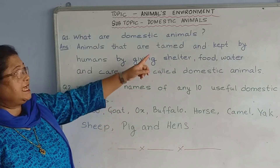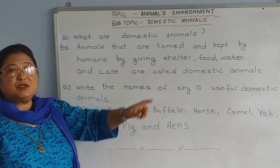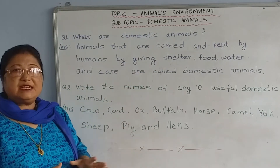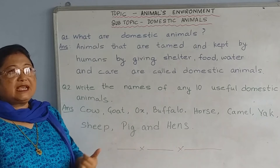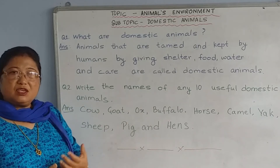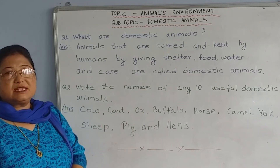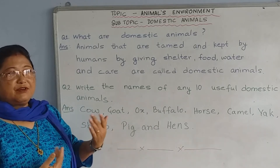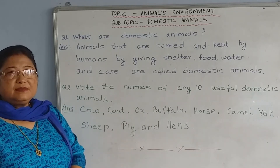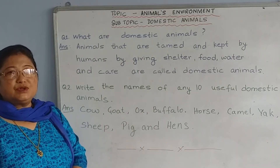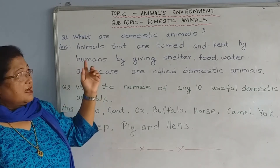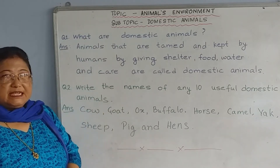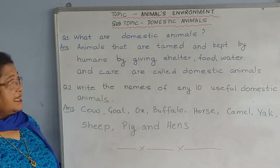We tame them and then we train them. So these domestic animals are very useful animals. They give us many things. So these are called domestic animals.